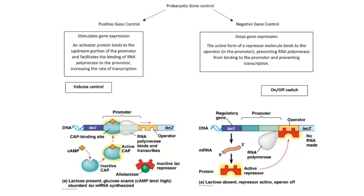Then we have positive gene control as opposed to negative gene control. Negative gene control covers both the lac operon and the trp operon. In both cases, we have a repressor molecule. When the repressor is active, it bonds to the operator and stops transcription. This is really an on-off switch: if the repressor has bonded to the operator, it's off; if the repressor has not bonded, it's on.